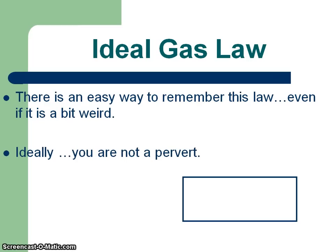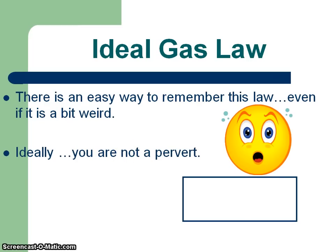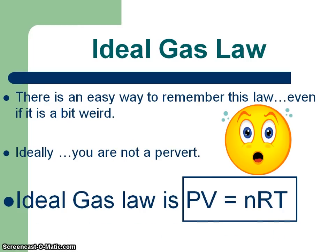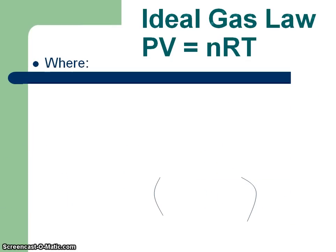Ideally, you're not a pervert. The ideal gas law is PV = nRT — Perv Nert. Get it in your head. Let's explain what each part of this is. The ideal gas law, Perv Nert, is where P is pressure.